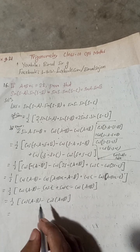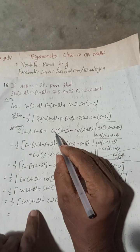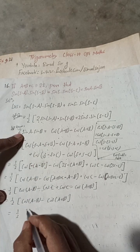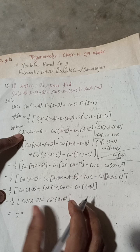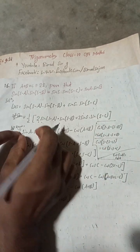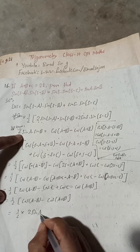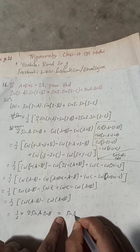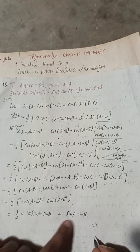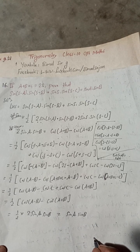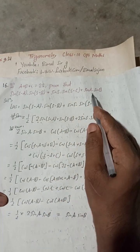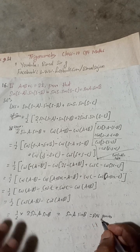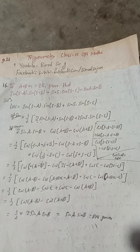Now you can see that cos(a−b) − cos(a+b) is exactly the formula for 2·sin(a)·sin(b). So 1/2 × [cos(a−b) − cos(a+b)] = 1/2 × 2·sin(a)·sin(b) = sin(a)·sin(b), which equals the RHS. Proved.